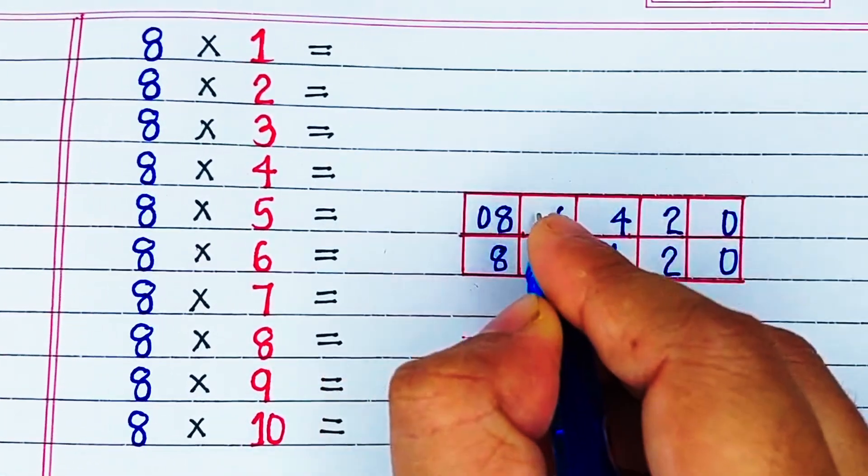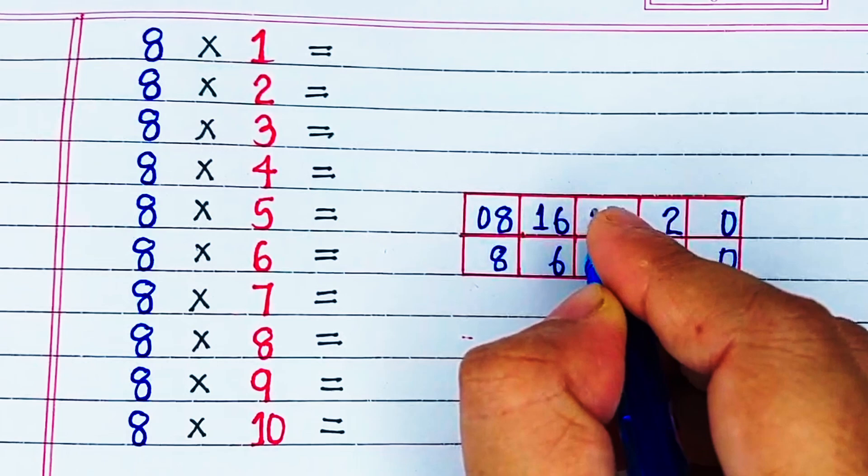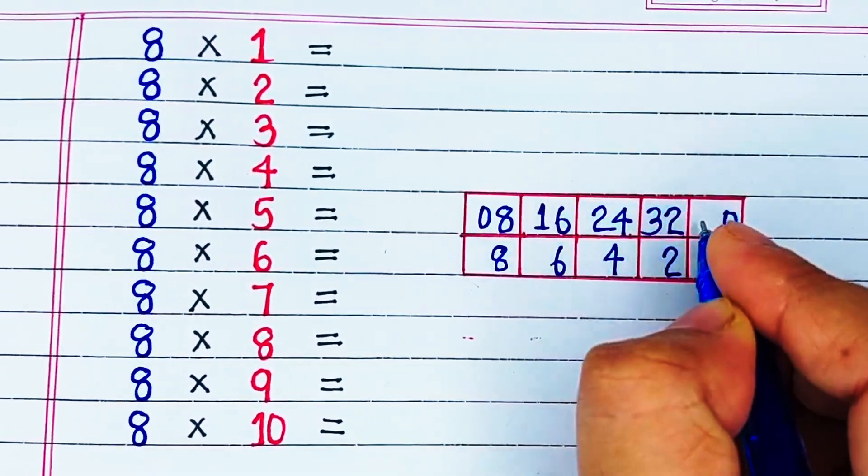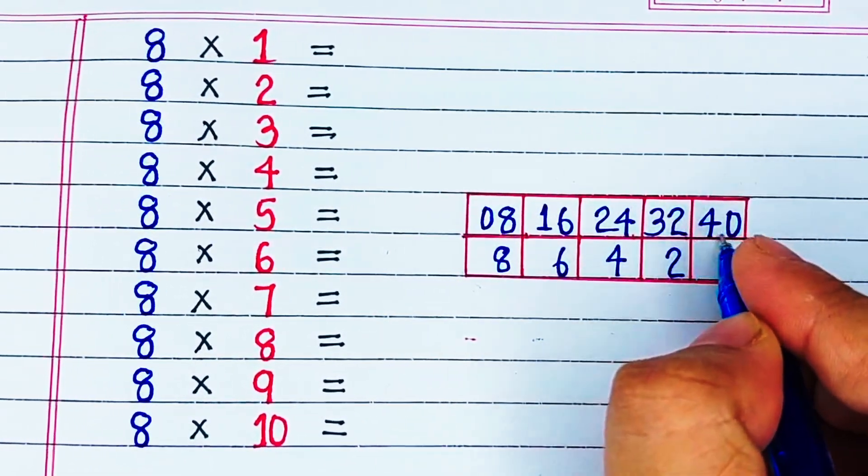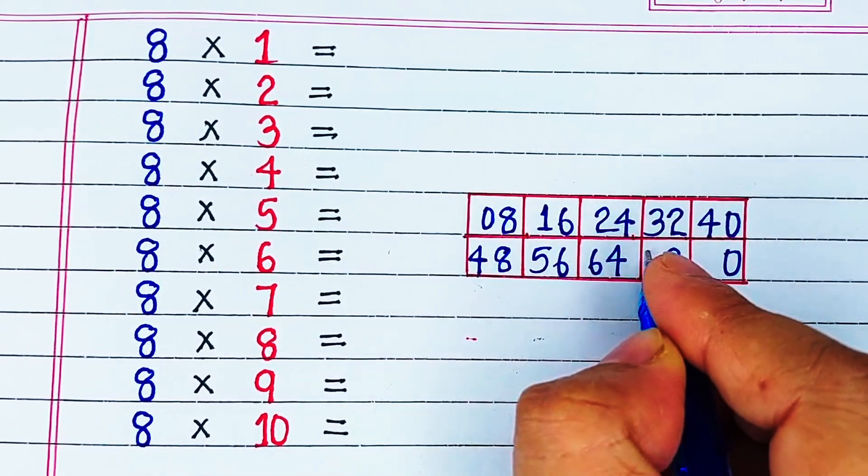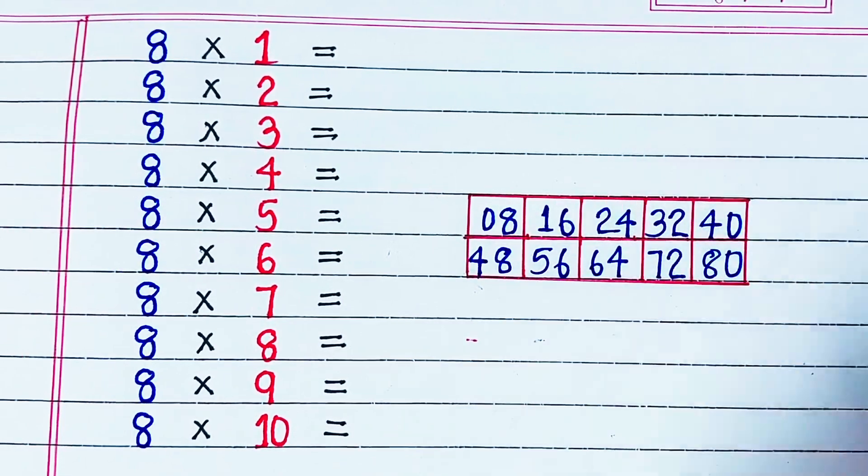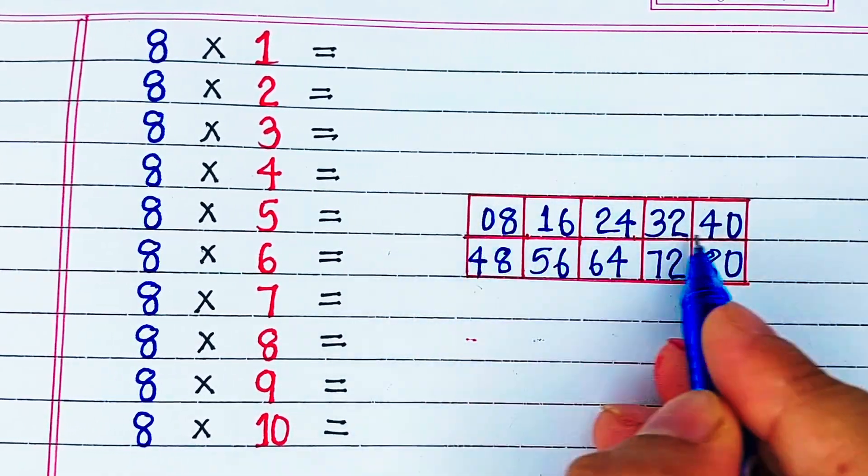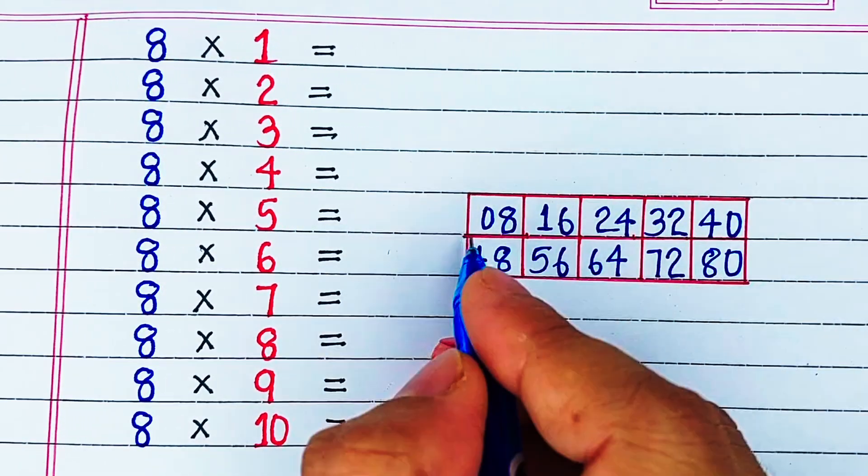Now for the tens digit, we will start from the left top most corner again and we will write 0 to 8. Remember, the tens digit of the right top corner must be same as the tens digit of the left lower corner. This forms our 8 times table.